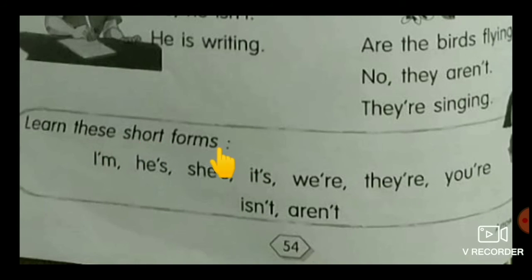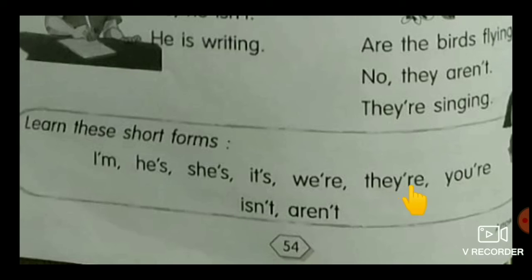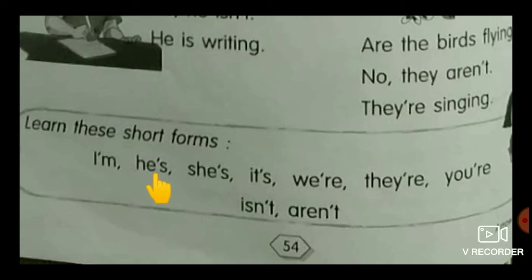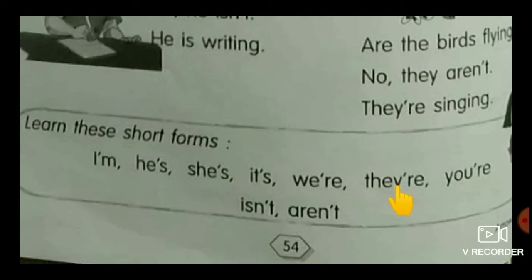Learn these short forms. Observe children — here we have some short forms. I'm, He's, She's, It's, We're, They're, You're, Isn't, Aren't. In the contractions, the missing letter is replaced with an apostrophe. For example, in I'm, the letter A is replaced with an apostrophe. In He's, She's, It's — the letter I is replaced. In We're, They're, You're — the letter A is replaced with an apostrophe.